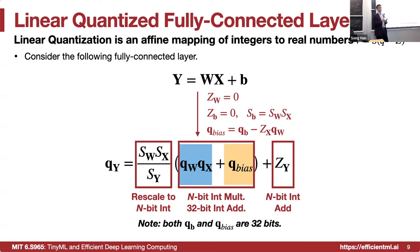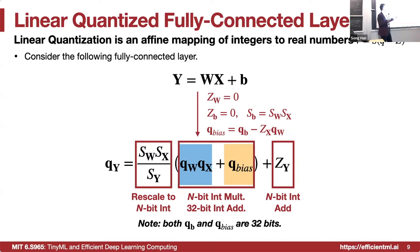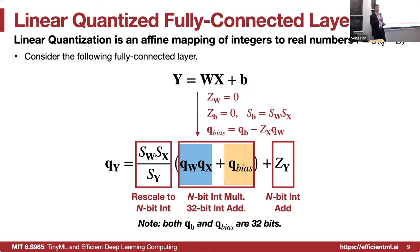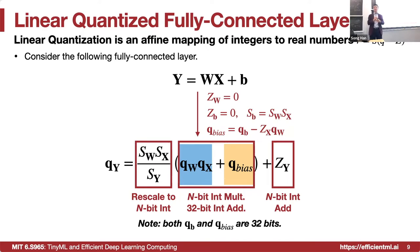The zero point for the bias is also zero, which simplifies the calculation. The scaling factor of the bias equals the multiplication of the scaling factor of the weight with the activation. We define q_bias accordingly. Finally, we found that we can perform the majority of the computation in fully integer multiplication, accumulating using 32-bit integer addition. The scaling factor can be applied using bit shifts, together with integer operations, finishing with an n-bit integer add.